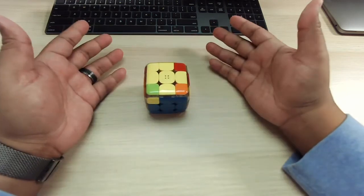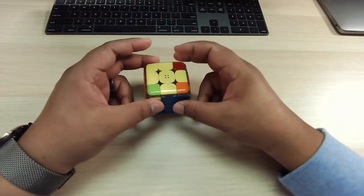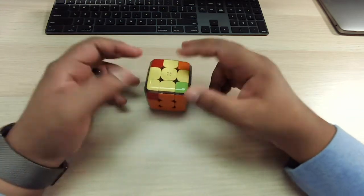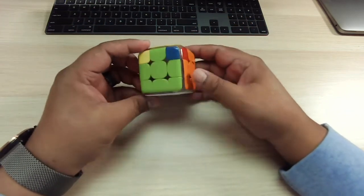So now in session three, we're going to learn about orienting and permutating the corner pieces where they belong and then finishing off the Rubik's cube. Okay. So hopefully you enjoyed this session.